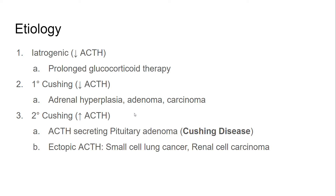Secondary Cushing syndrome is caused by increased ACTH, which increases stimulation of the adrenal gland, leading to increased cortisol production and causing Cushing syndrome. There are two main sources of ACTH: first, ACTH-secreting pituitary adenoma — when Cushing syndrome is caused by a pituitary adenoma, we specifically call it Cushing disease. Remember, Cushing disease only refers to Cushing syndrome caused by an ACTH-secreting pituitary adenoma. The other source is ectopic ACTH — for example, some cancers such as small cell lung cancer or renal cell carcinoma can produce ACTH, which stimulates the adrenal cortex to produce cortisol.